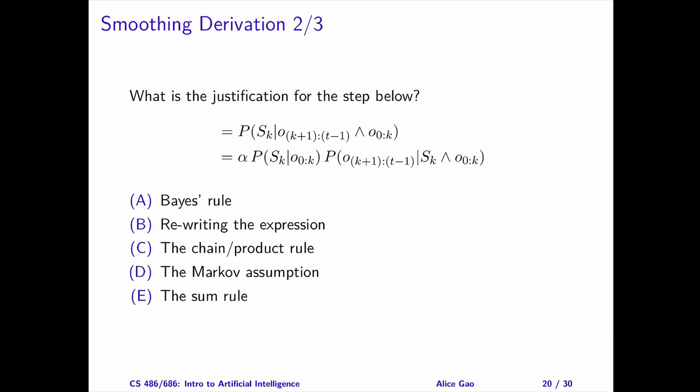Step 2. Pause the video and choose an answer. The correct answer is A, base rule. It's easier to see this when you cross out the last variable in every term, o sub 0 to k, since it appears in all three terms. We switch the places of s sub k and o sub k plus 1 to t minus 1 using the base rule.